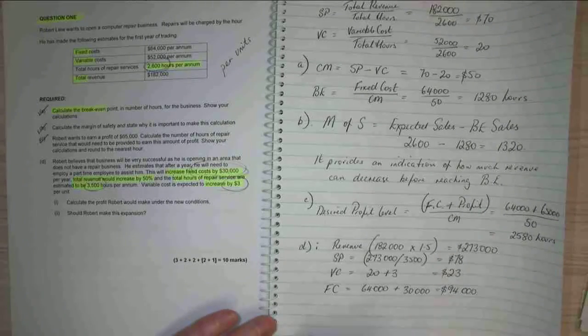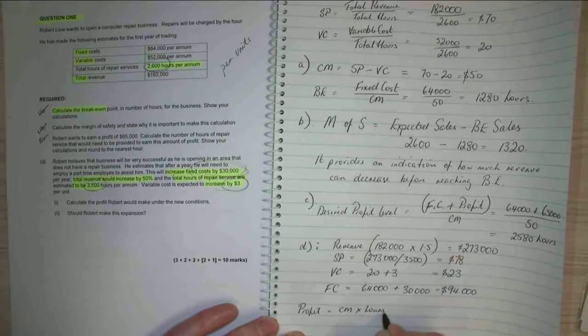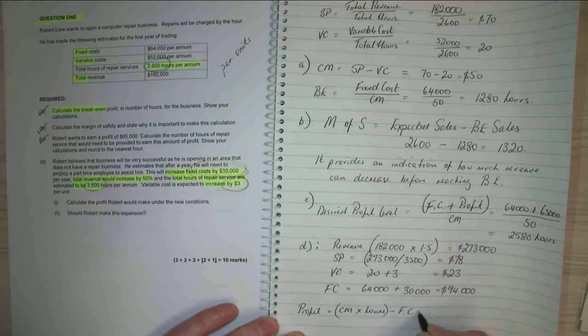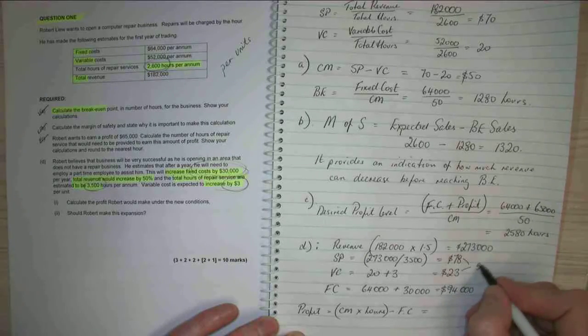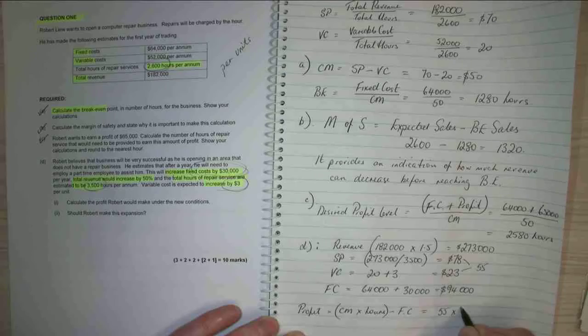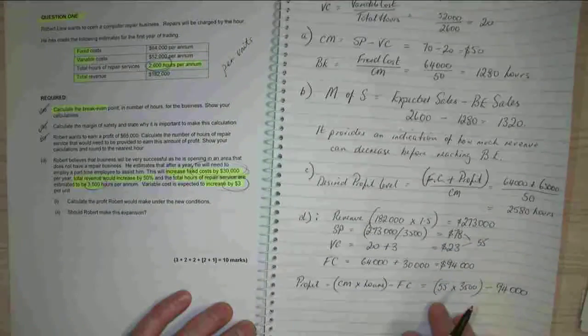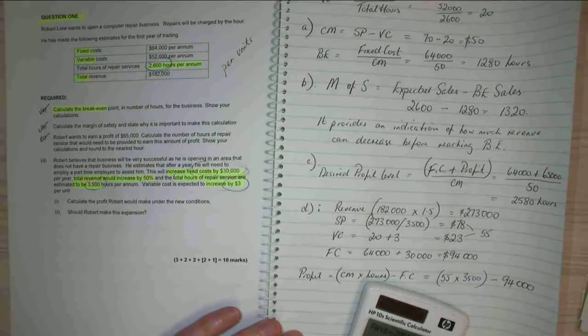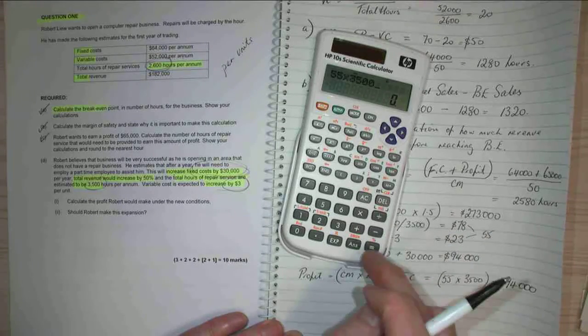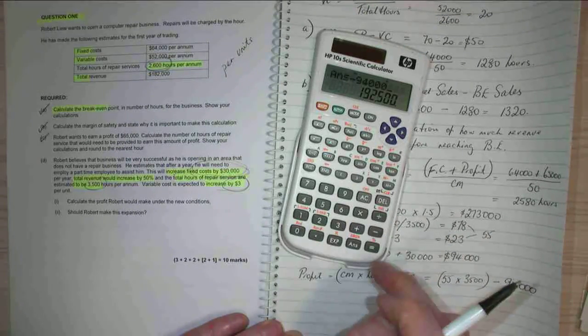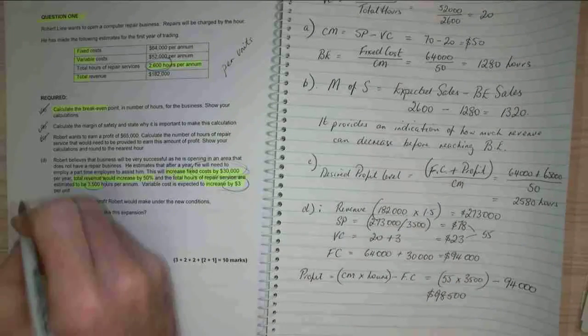So what's my profit going to be? Equals my contribution margin times hours minus fixed cost. So that equals my contribution margin is $55. $55 times 3,500 minus $94,000 equals $98,500. So that calculates the new profit.